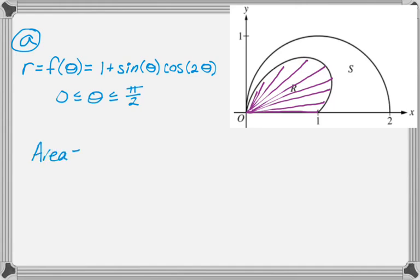And so area is going to be 1 half, the integral from 0 to pi over 2. And then, so the number one thing people forget is that 1 half. So if you've got the 1 half, you've already accomplished that.